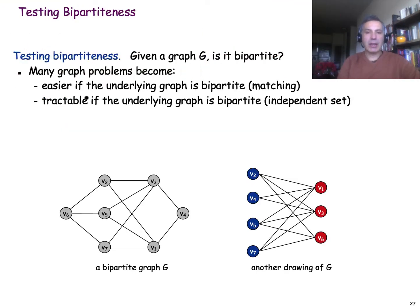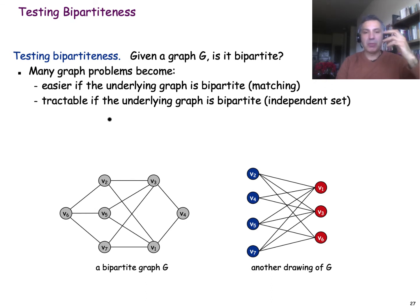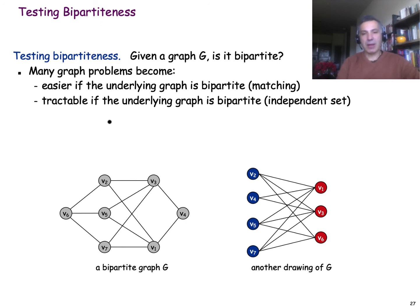Why would you want to check if a graph is bipartite? It turns out that if the graph is bipartite it has a special structure that makes many algorithmic problems either easier or tractable. For a general graph, a problem may be intractable in the sense that we don't have an algorithm that runs in polynomial time, but if the graph is bipartite, then we do have such algorithms.